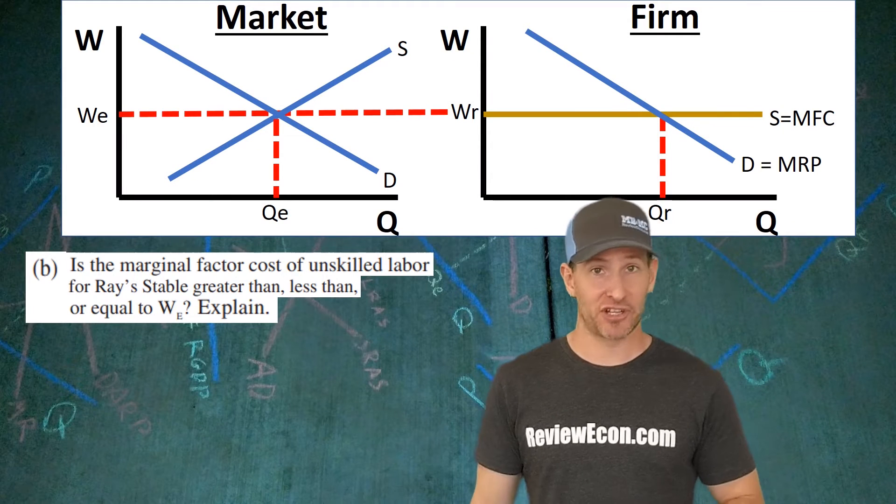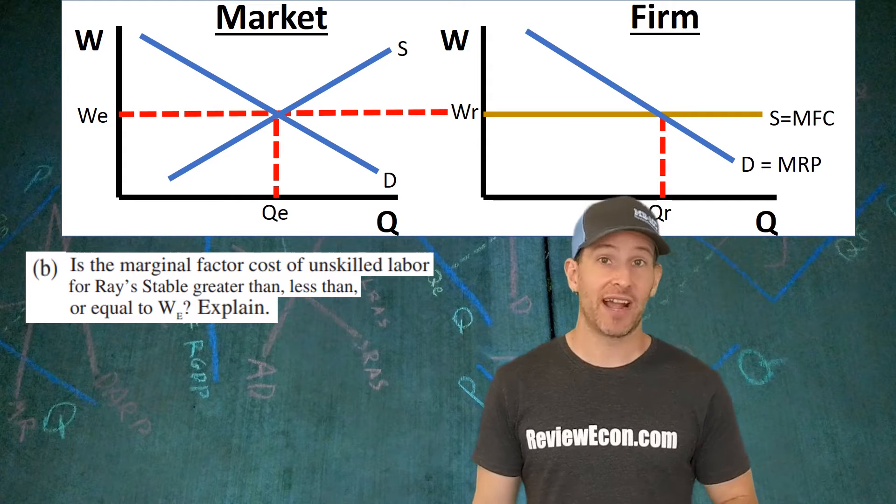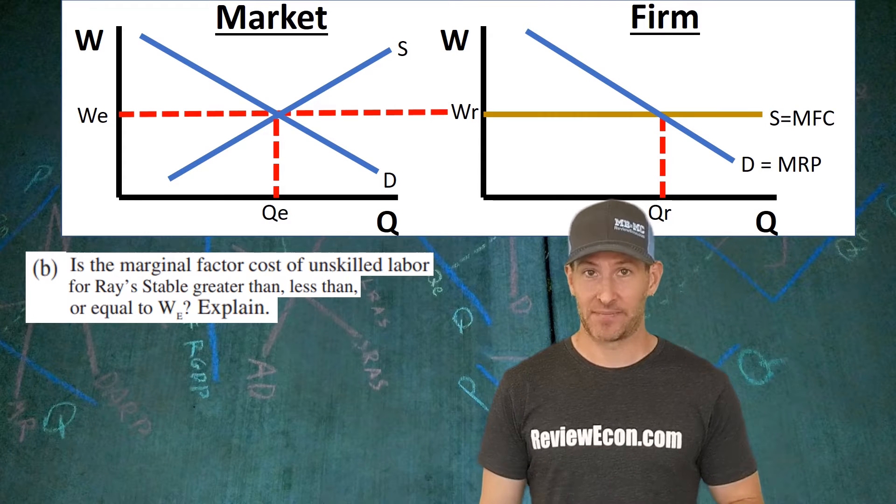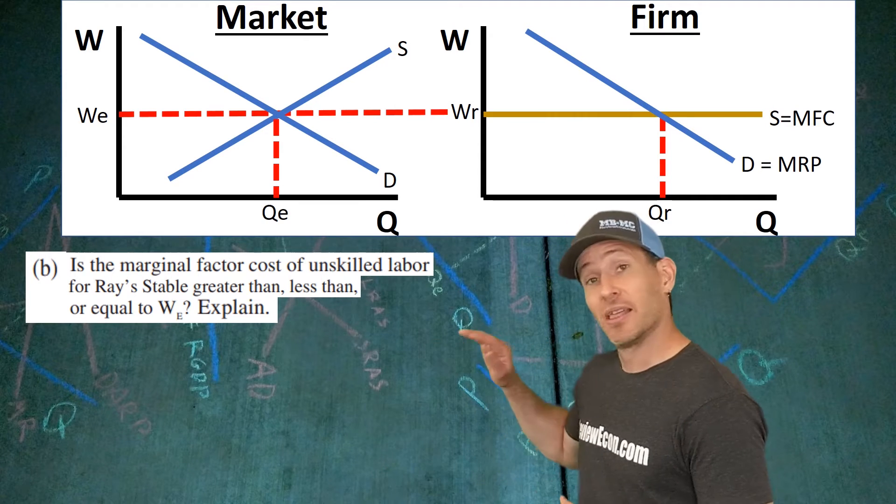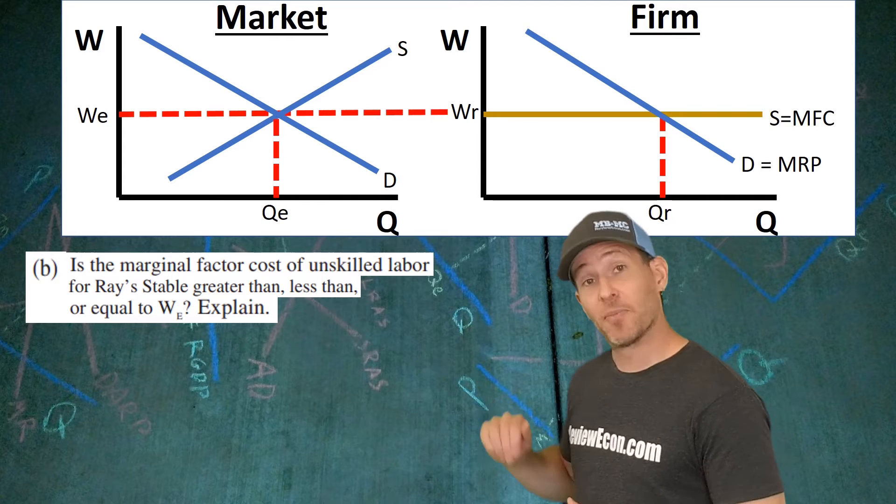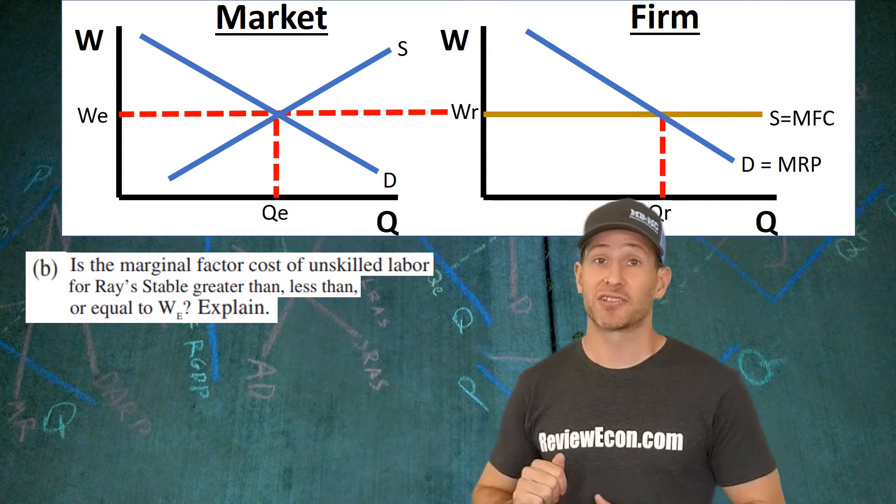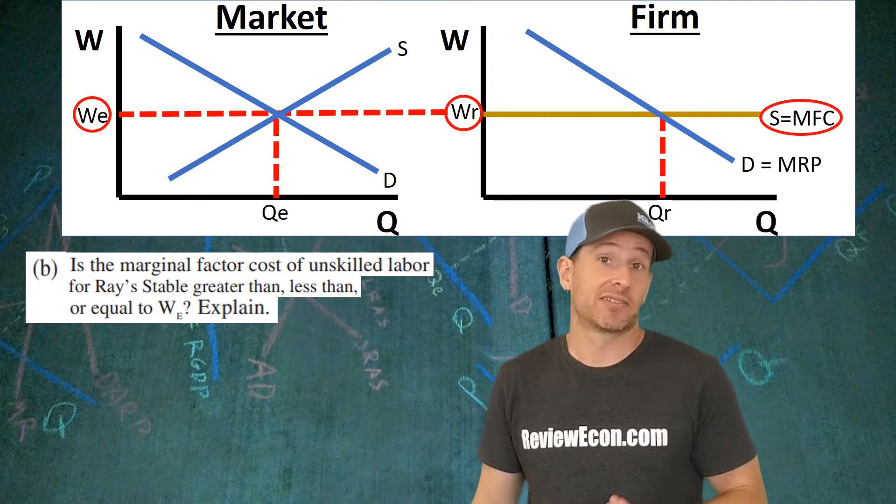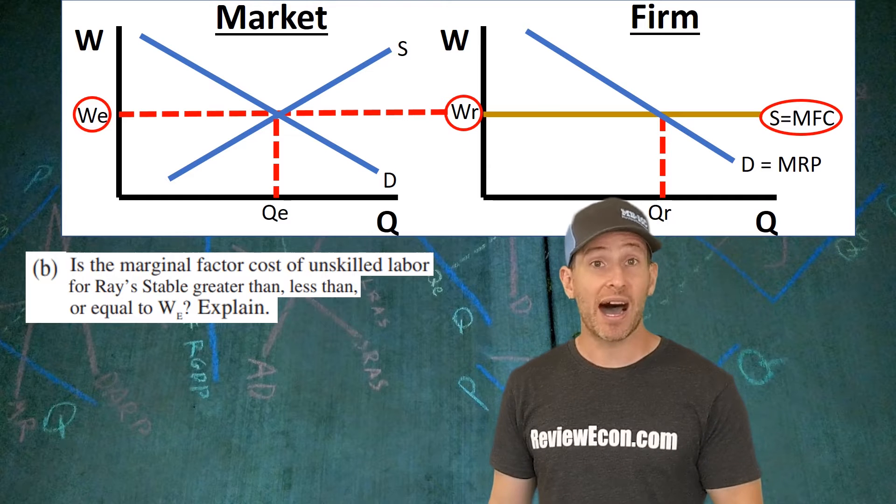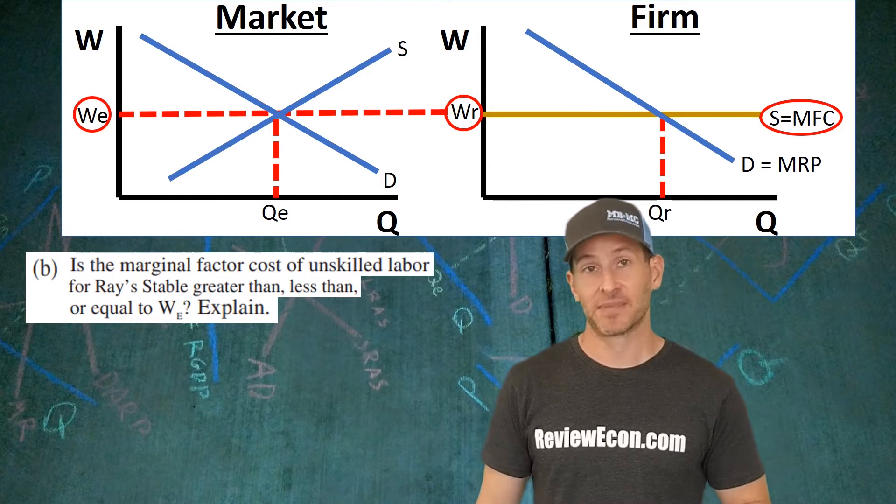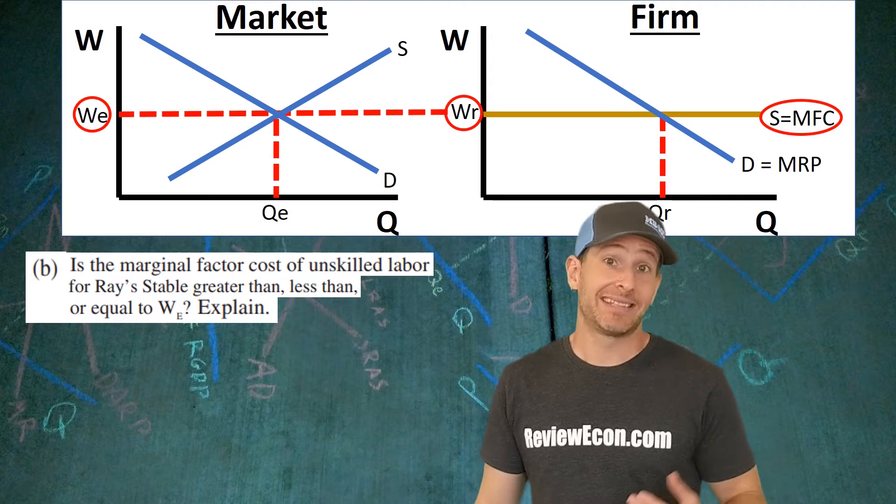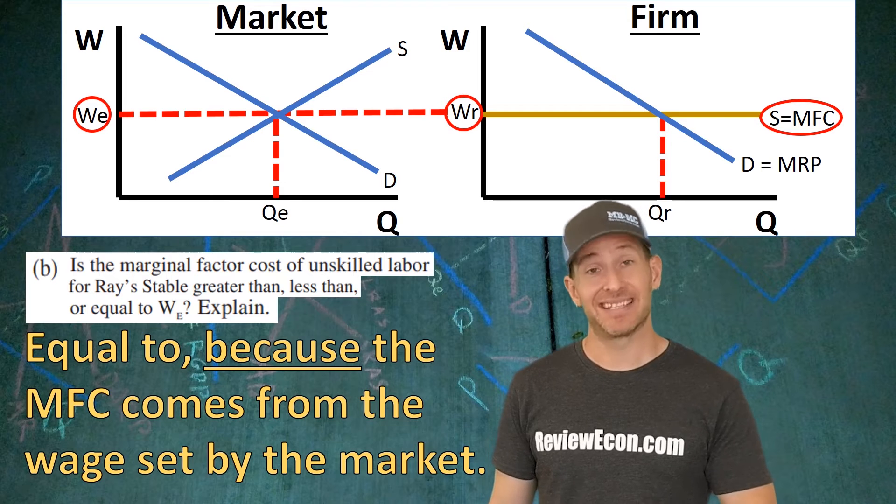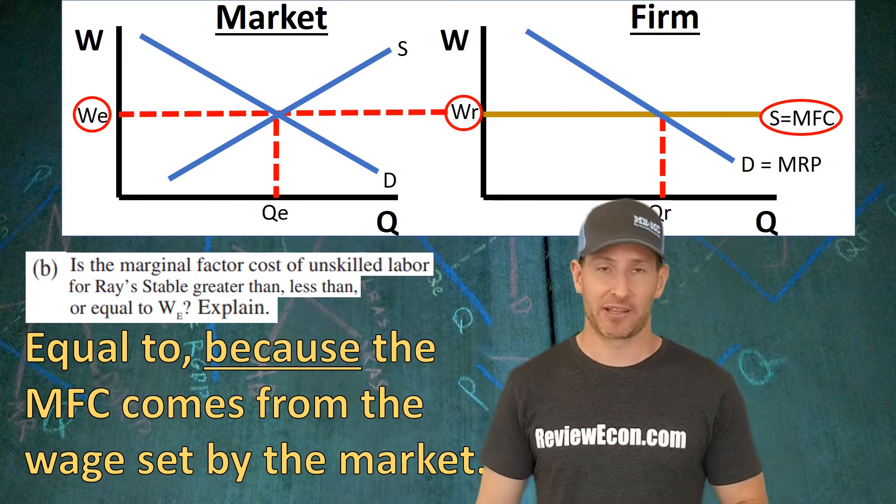Part B asks us to determine if Ray Stable's marginal factor cost is equal to, less than, or greater than the wage set by the market. As I just mentioned in the last question, the wage that the market sets comes all the way across to the firm's graph, and that becomes the marginal factor cost that Ray Stable faces. The reason why, that's the explain point here, is that Ray Stable is a wage taker. That means the price, or the wage in this case, is set by the market. That's what happens in perfectly competitive markets.